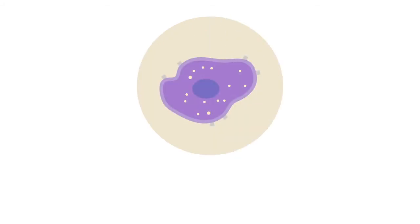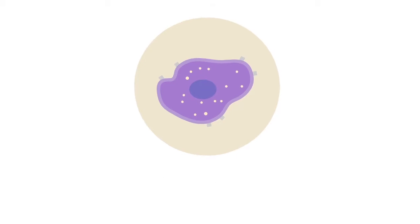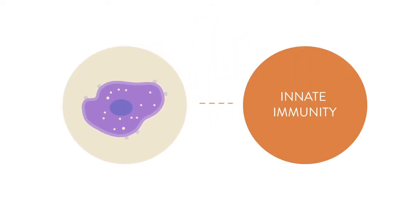The cells that are involved are mainly something called mast cells. There are a few other cells called basophils that also play a role, but for all intents and purposes, the mast cells are the ones that cause allergies. These cells are part of the innate immune system.